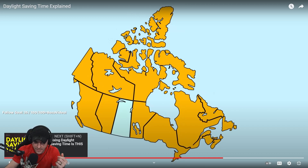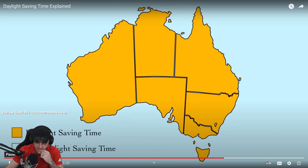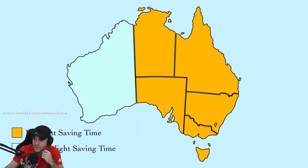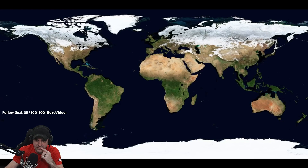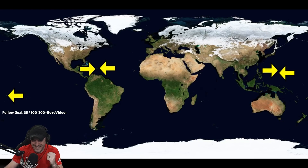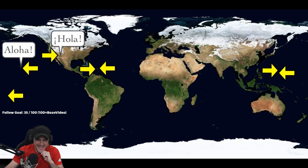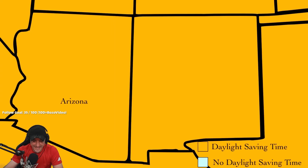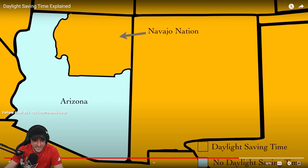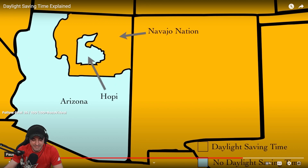Most of Australia does daylight saving time, but not Western Australia, the Northern Territory, or Queensland. The United States observes daylight saving time unless you live in Puerto Rico, the Virgin Islands, American Samoa, Guam, the Northern Mariana Islands, or as mentioned before, Hawaii and Arizona. But Arizona isn't even consistent within itself - while Arizona ignores DST, the Navajo Nation inside Arizona follows it, and inside the Navajo Nation is the Hopi Reservation, which like Arizona ignores daylight saving time.